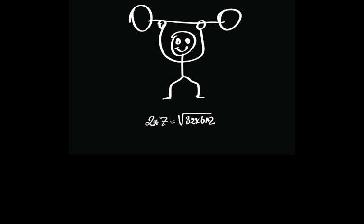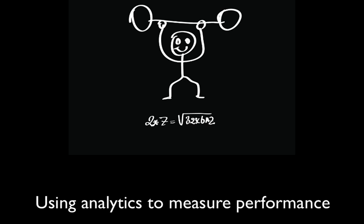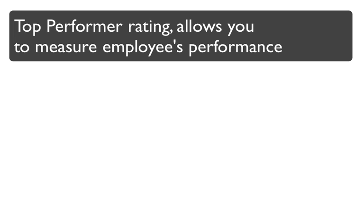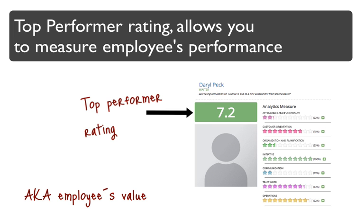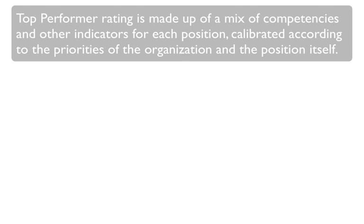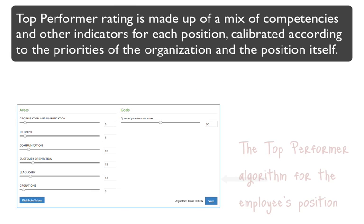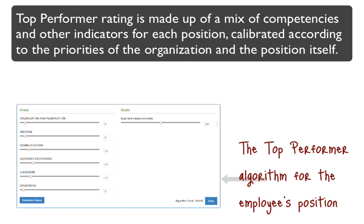Analytics in human resources can be used for several purposes. Use analytics to measure performance. Top performer, also known as employee's value, allows you to measure employee's performance. Top performer rating is made up of a mix of competencies and other indicators for each position, calibrated according to the priorities of the organization and the position itself.